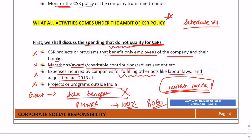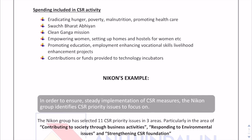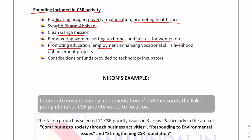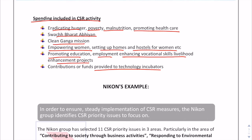The activities included in CSR under Schedule 7 include: eradicating hunger, poverty, and malnutrition; promoting health care; Swachh Bharat Abhiyan; Clean Ganga Mission; empowering women; setting up homes and hostels for women; promoting education; employment and enhancing vocational skills; livelihood enhancement projects; and contributions to technology incubators. Any spending that does social good, economic development, or social development that is socially or economically desirable by society is included in Schedule 7.